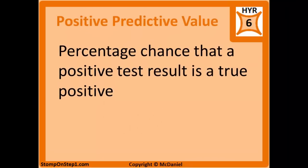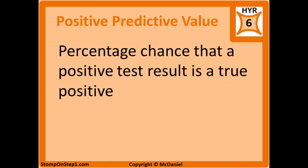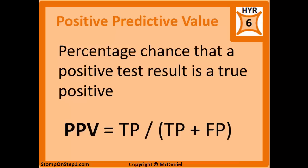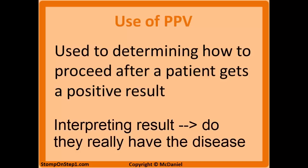The positive predictive value is just the percentage chance that a positive test result is a true positive. Put another way, it's the percentage chance that a patient with a positive result actually has the disease. The formula is true positives divided by true positives plus false positives. You use positive predictive value when you're trying to determine how to proceed after a patient gets a positive result — you're trying to figure out what that positive result means to this specific patient.